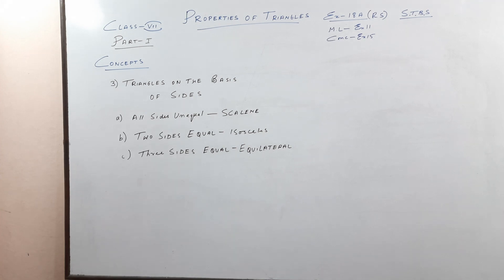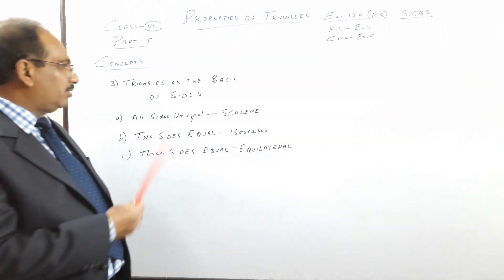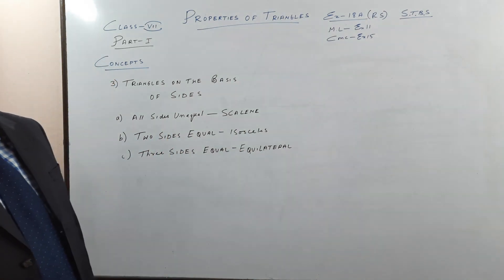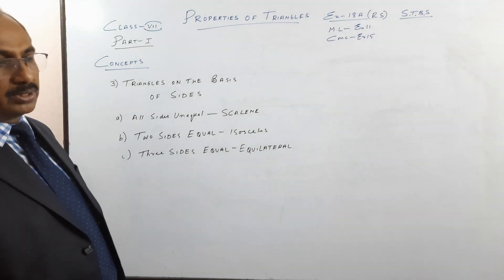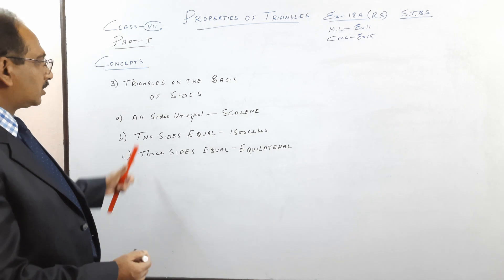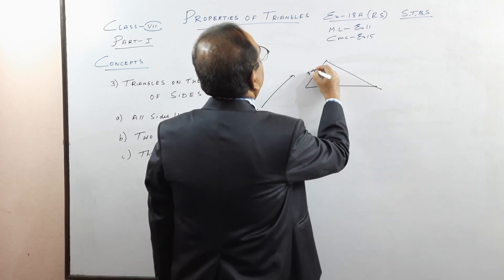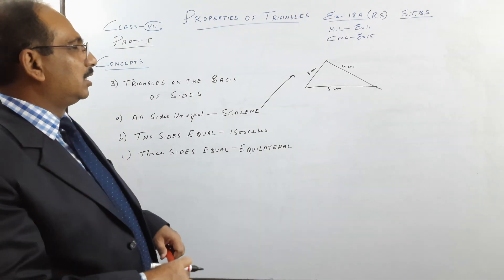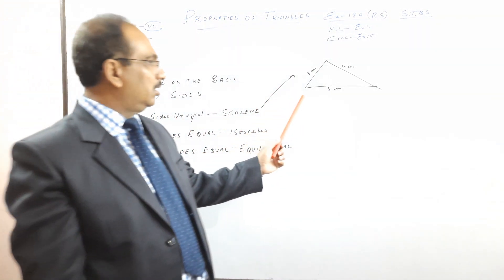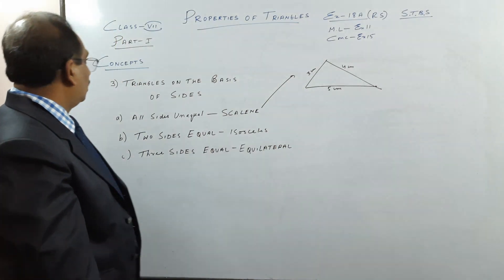Triangles on the basis of sides: when all three sides are unequal, it is called a scalene triangle. For example, sides of 3 cm, 4 cm, and 5 cm form a scalene triangle. In a scalene triangle, all three angles are also different, but their sum is always 180°.